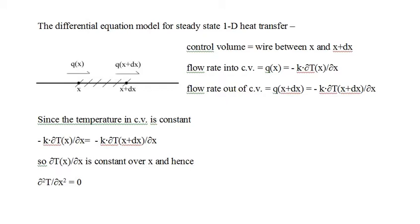Since the temperature of the control volume is not changing, it must be the case that the heat flow rate out equals the heat flow rate in, and hence q(x) equals q(x+dx). From Fourier's heat transfer law, q(x) equals minus k times the partial derivative of temperature with respect to x at x, and q(x+dx) equals minus k times the partial derivative at x+dx. So the partial derivative of temperature with respect to x is constant, and the second partial derivative of temperature with respect to x is zero — and that's our differential equation model for 1D steady-state heat transfer.